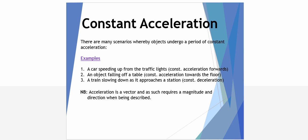Constant acceleration is used regularly in physics, particularly at year 11 and year 12 levels. Some common scenarios might be a car speeding up from the traffic lights, perhaps an object falling off a table, or a train slowing down as it approaches a station. All three of these examples have constant acceleration. It's worth mentioning that acceleration is a vector, and as such it requires a magnitude and a direction when it's being described.